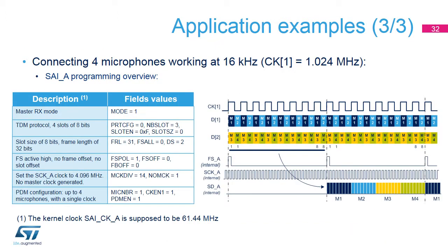This example shows the most important SAI settings to capture samples from four digital microphones. In typical applications, the microphones receive a bitstream clock frequency 64 times higher than the wanted audio rate. If the application needs to handle a 16 kHz audio stream, the bitstream clock provided to the digital microphones must be 16 kHz multiplied by 64, corresponding to a clock frequency of 1.024 MHz. As there are four data streams, the bitclock SCKA must be four times higher than the bitstream clock, resulting in a bitclock frequency of 4.096 MHz. Using this configuration, SAIA writes into its RX FIFO an 8-bit data every time a slot is received. In order to reconstruct the 16 kHz audio signal, the software has to perform a low-pass filtering of each microphone stream followed by a decimation by 64.